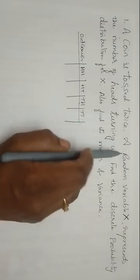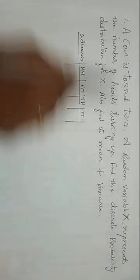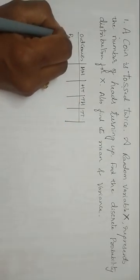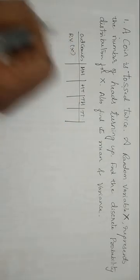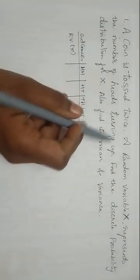Next, for this outcomes, they have taken the random variable X which represents the number of heads turning up. So random variable is X. The random variable X is the number of heads turning up.